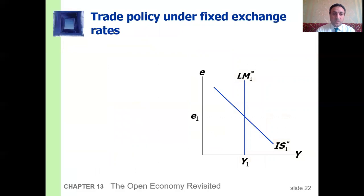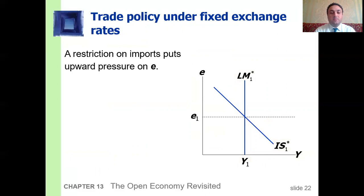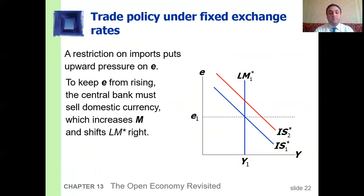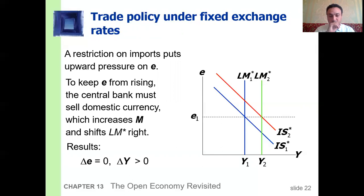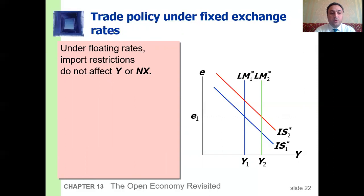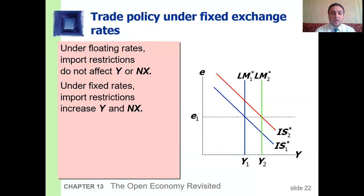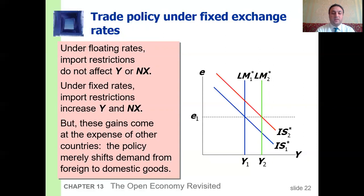Trade policy under the fixed exchange rate: any restriction on imports puts upward pressure on the nominal exchange rate. To keep the nominal exchange rate from rising, the central bank must sell domestic currency, which increases the money supply and shifts the LM curve to the right. The result is no change in the nominal exchange rate but an increase in output and income. Under floating rates, import restrictions don't affect output or net exports; but under fixed rates, import restrictions increase output and net exports, though these gains come at the expense of other countries.